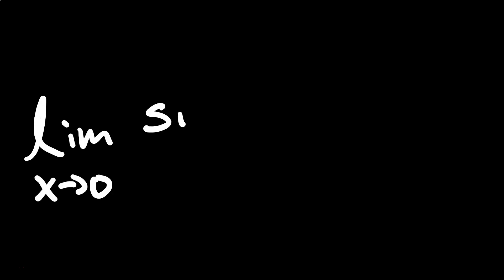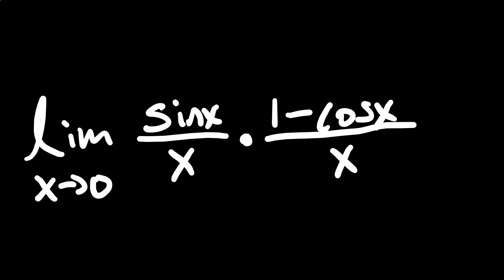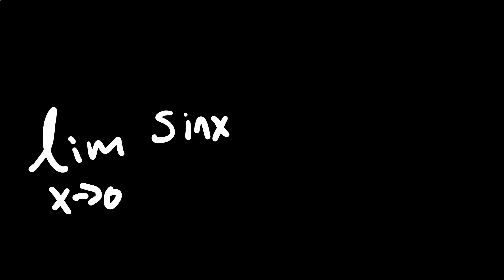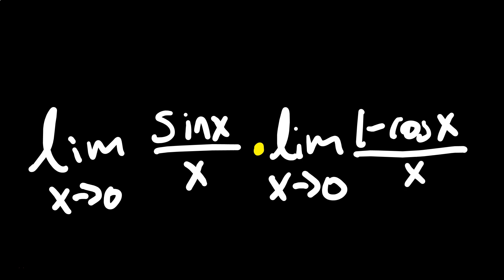At the next stage, we can separate things into the limit as x approaches 0 of sine of x over x, times that 1 minus cosine x over x — separate into separate fractions. And that's going to be the limit as x approaches 0 of sine of x over x, times the limit as x approaches 0 of 1 minus cosine x over x.